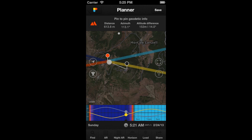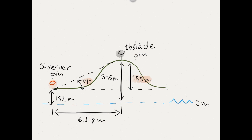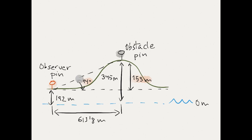Let's see it on a picture. If we do a section cut by the white dotted line connecting the two pins, we get this picture. The Observer's Pin is located at an altitude of 192 m above sea level and the Obstacle's Pin at an altitude of 345 m above sea level. The difference of altitudes tells us that the Obstacle has an altitude of 153 m above the Observer's Pin. The distance between the two pins is 613.8 m. Taking into account the curvature of the earth, the elevation of the Obstacle's Pin relative to the Observer's Pin is 14 degrees.